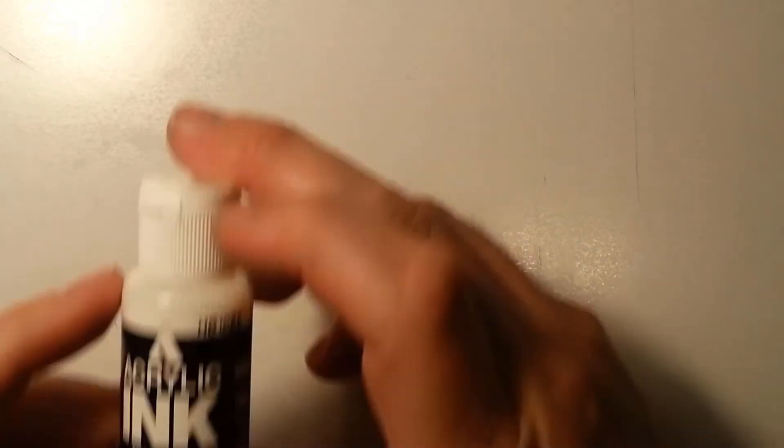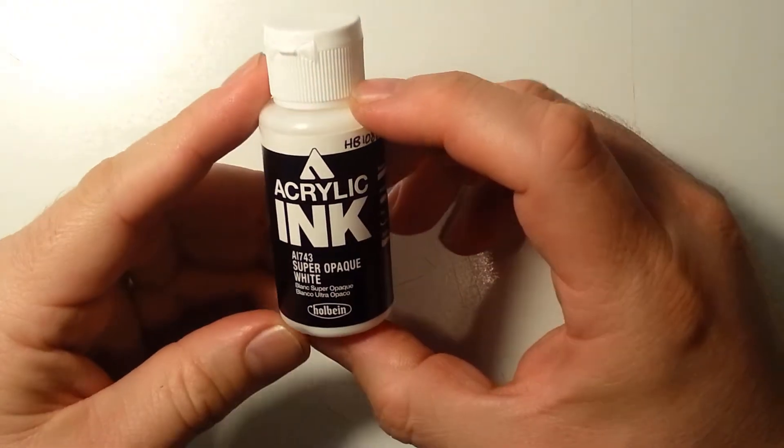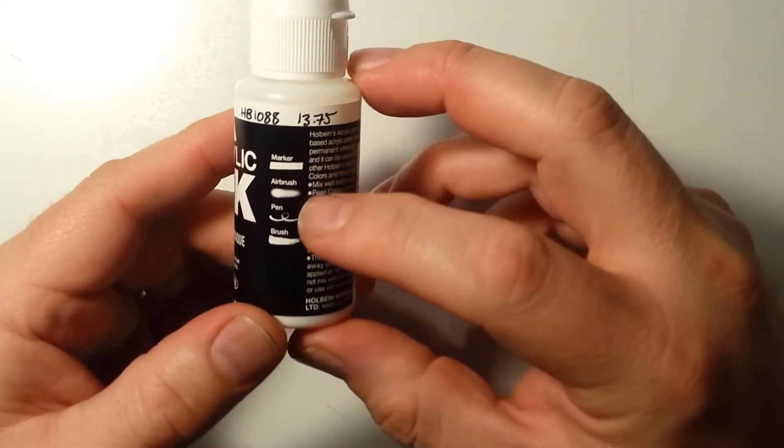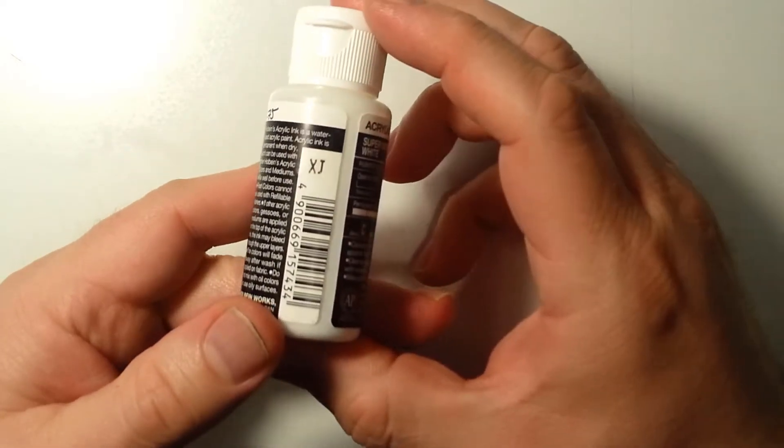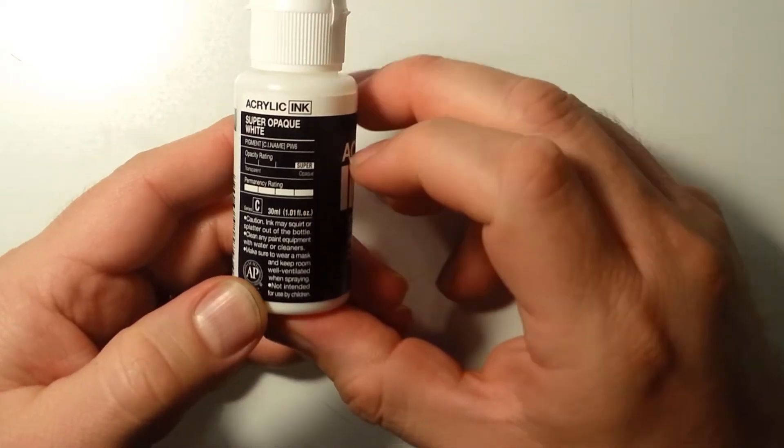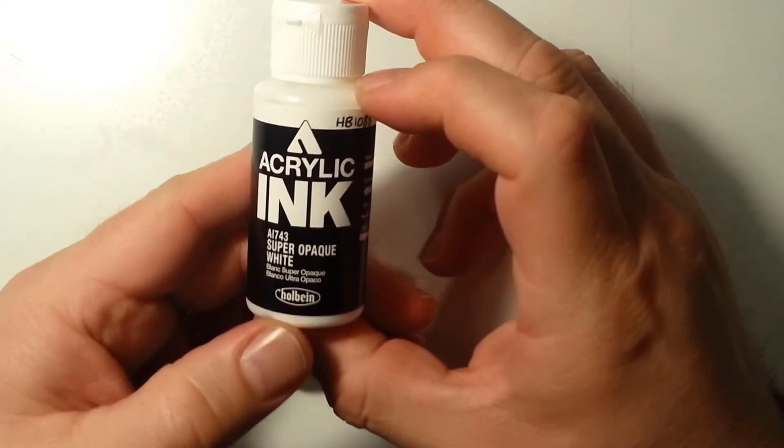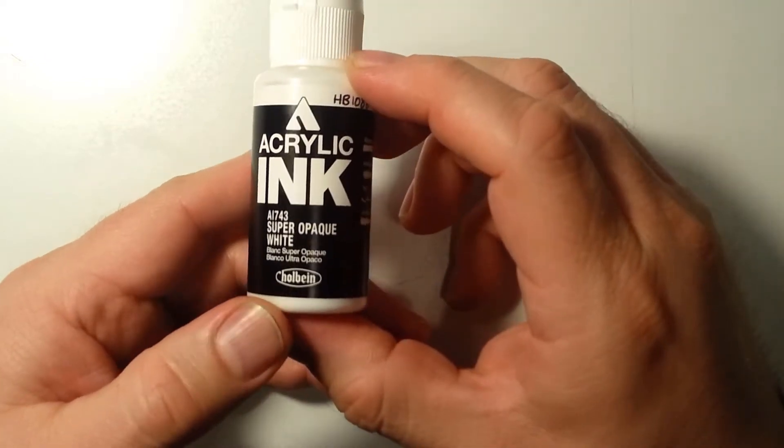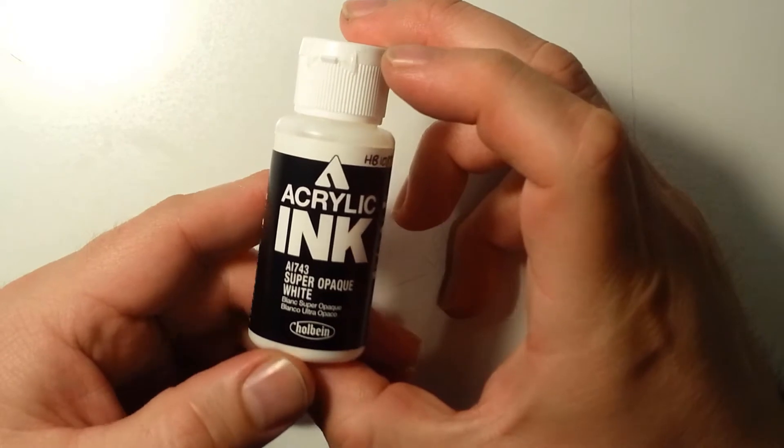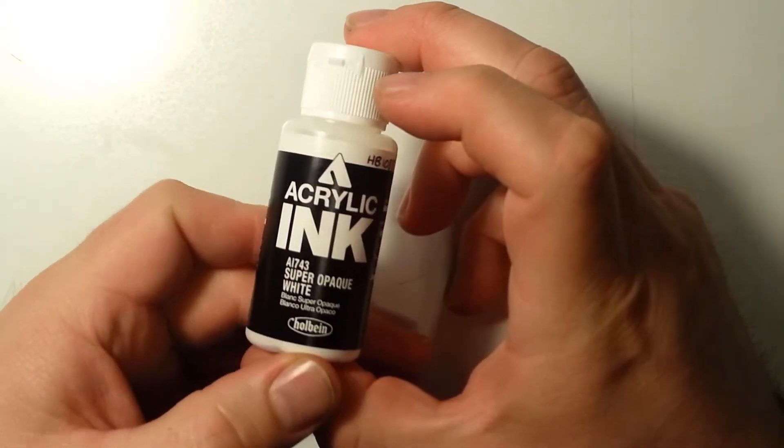For this first art supply, we're going to check out acrylic ink opaque white. According to this, the opacity is super white or whatever that means. Anyway, it's acrylic ink by a brand called Holbin or something like that. I'm not really sure but we'll check this one out.